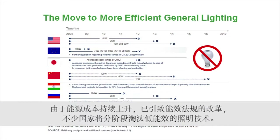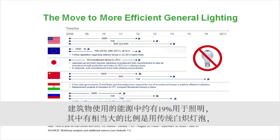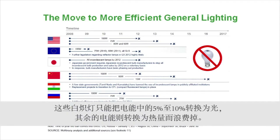As the cost of energy continues to rise, significant attention has been placed on regulatory reform to phase out inefficient technologies. Approximately 19% of energy used in buildings is for lighting, and a significant percentage of that is traditional incandescent bulbs, which only convert 5-10% of the energy used into light. The remainder is converted to waste heat.